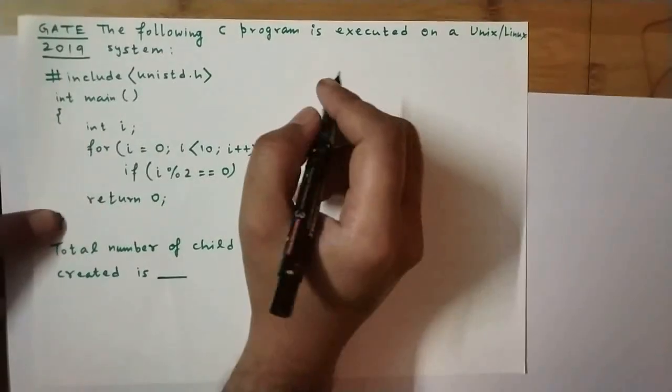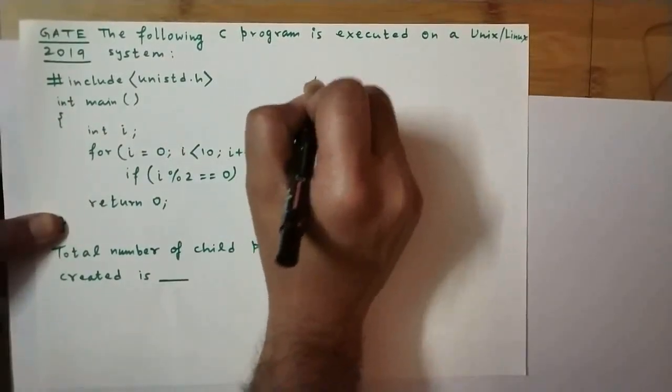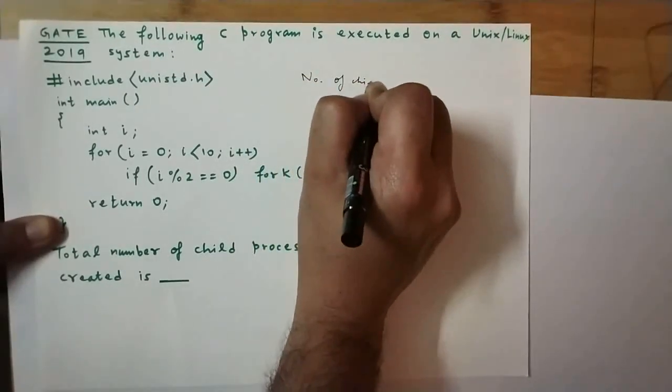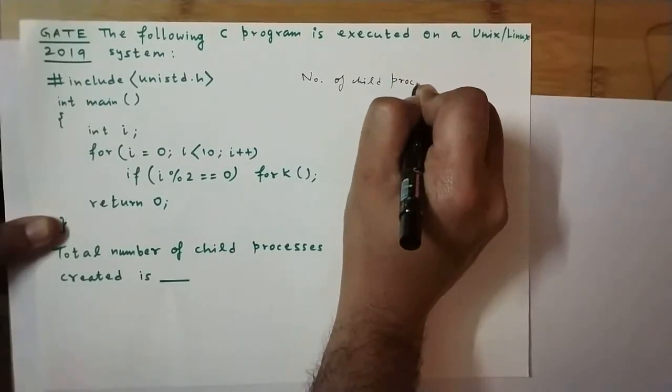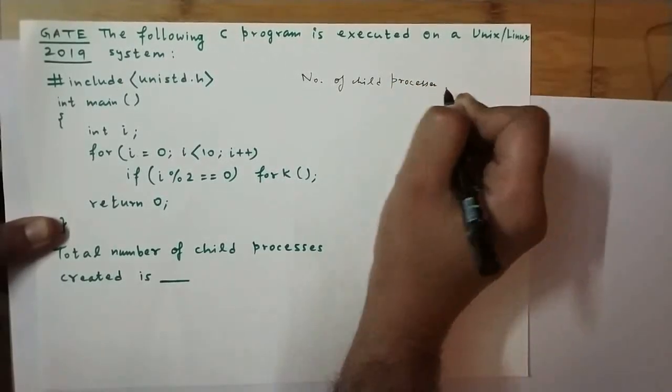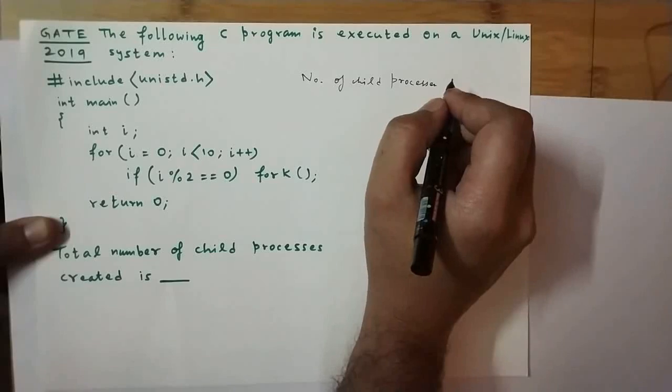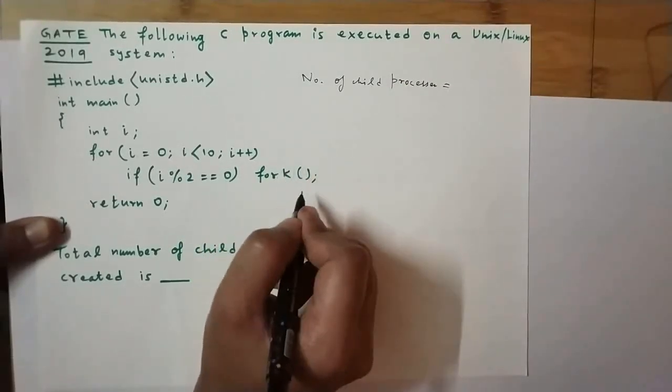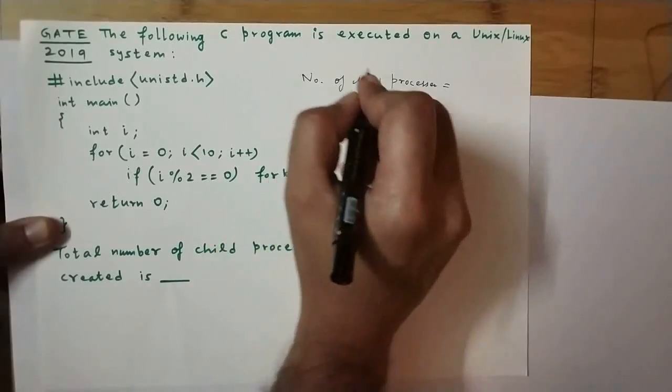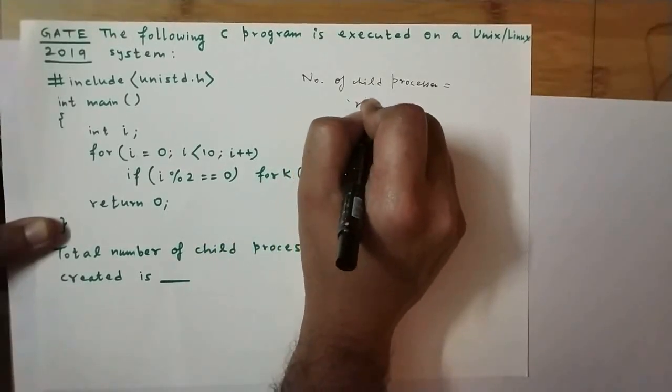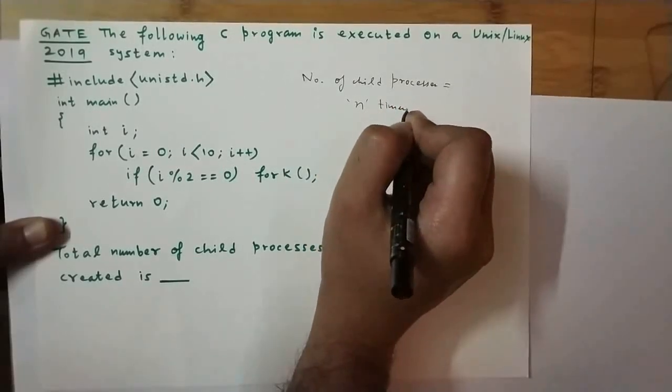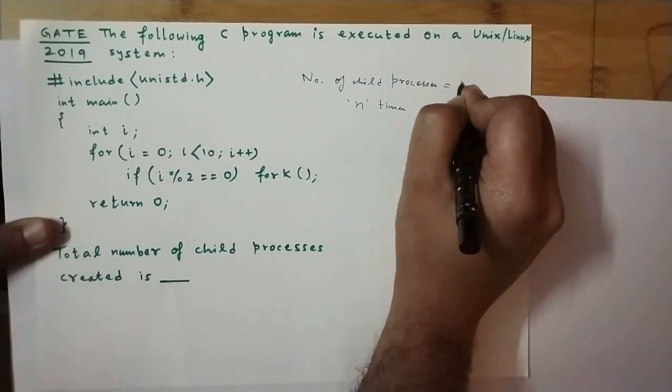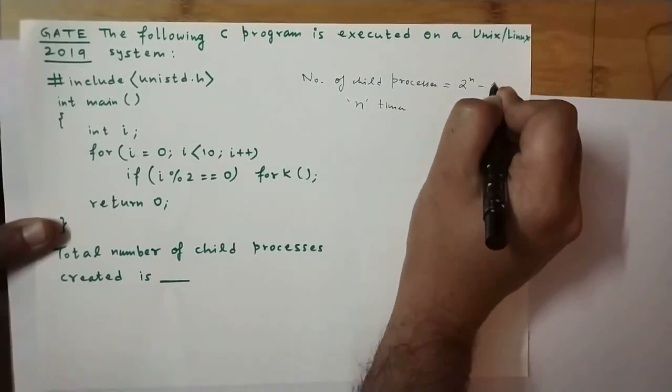Now what we must keep in mind is that the number of child processes that can be spawned depends on the number of times the fork system call is executed. If fork is called n times, then the number of child processes created is given by 2 to the power of n minus 1.